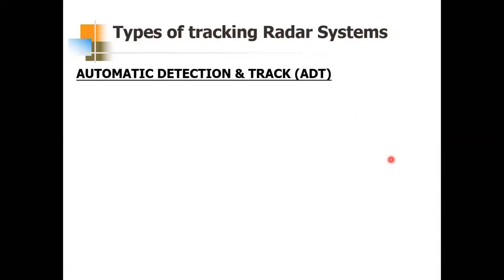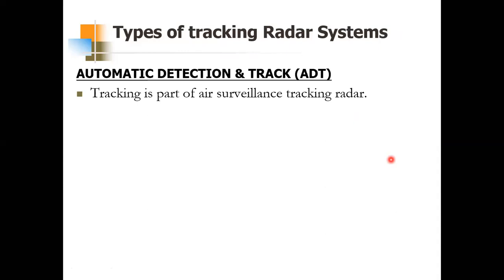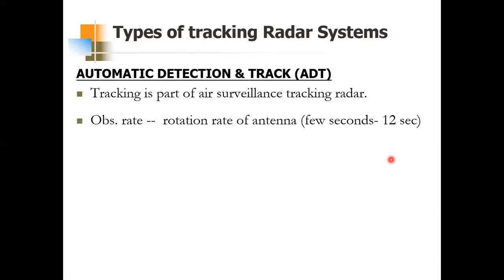The second type of tracking is Automatic Detection and Track (ADT). This performs tracking as part of an air surveillance radar. One disadvantage of ADT is that the rate at which observations are made depends on the time the antenna takes for one rotation, which ranges from a few seconds to 12 seconds. This means the data rate is actually lower than that of STT.